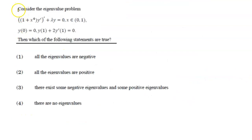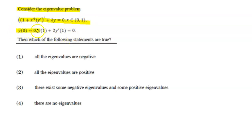Now come to the next question from Part C. The question says: consider the eigenvalue problem with boundary conditions y at 0 equals zero, and y at 1 plus 2y′ at 1 equals zero. Then which of the following are true?